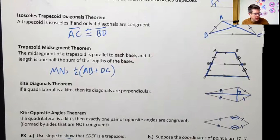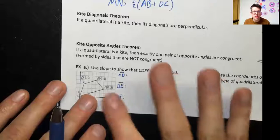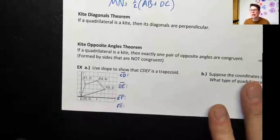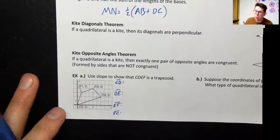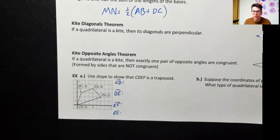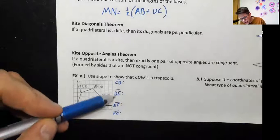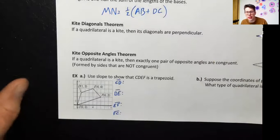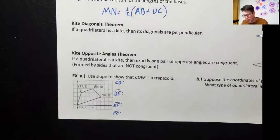Let's try using slope to show that shape CDEF is a trapezoid. Remember, the main thing you need for a trapezoid is exactly one pair of parallel sides. You're looking for slopes that are the same because those indicate parallel sides, but you also want to make sure you don't find too many. If there are too many parallel sides, that would disqualify it. You are going to need all four slopes — there are no shortcuts.